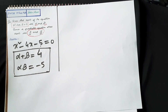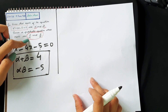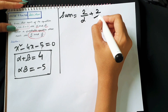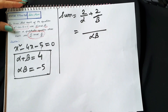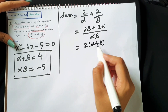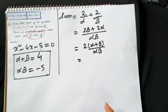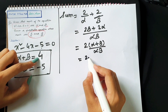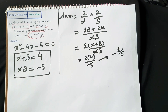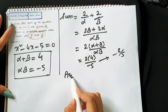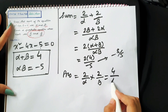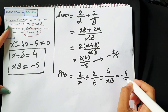Now we can find the sum and product for the new roots. The sum of the new roots: 2/α plus 2/β. Taking alpha times beta as LCM, this becomes (2β plus 2α) divided by alpha times beta, which equals 2(alpha plus beta) divided by alpha times beta. Substituting alpha plus beta equals 4 and alpha times beta equals minus 5, the sum equals 8 divided by minus 5, which is minus 8 by 5. For the product: (2/α)(2/β) equals 4 divided by alpha times beta equals 4 divided by minus 5, which is minus 4 by 5.